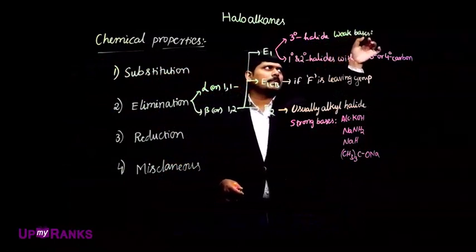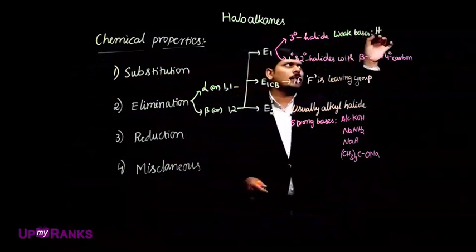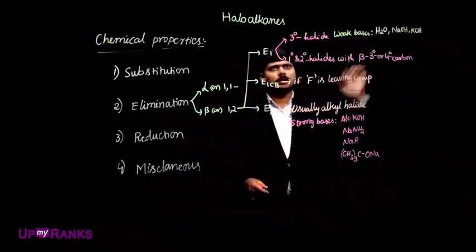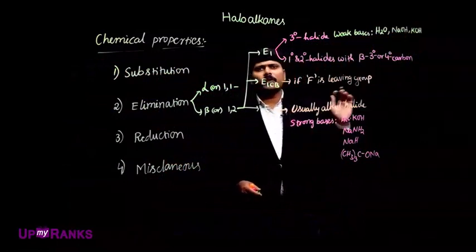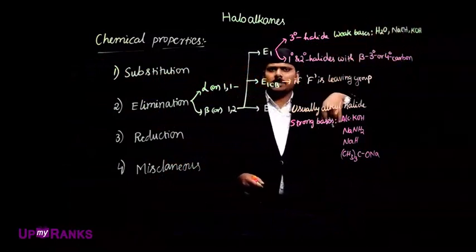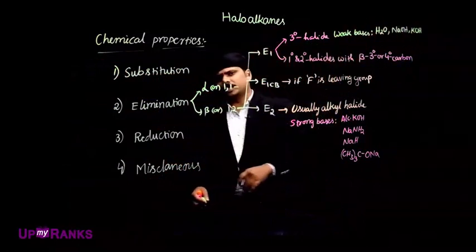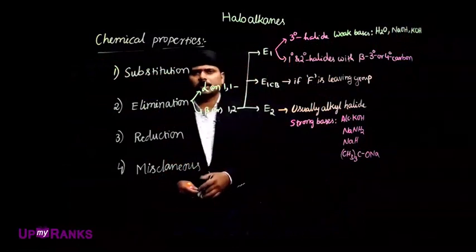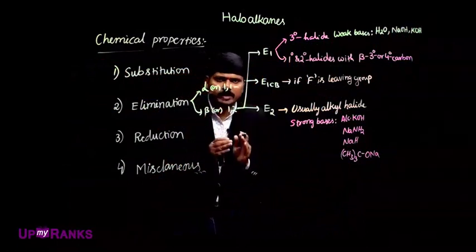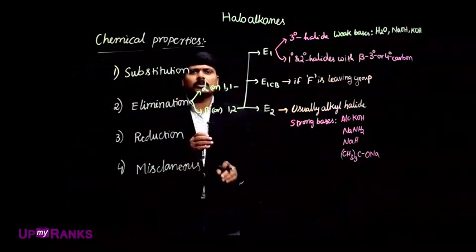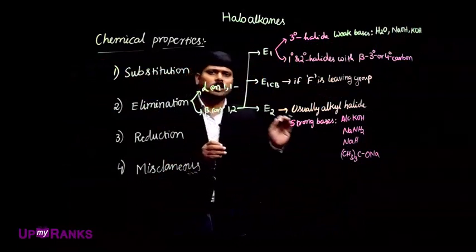Weak bases include water and dilute NaOH. In the presence of weak bases, E1 elimination can occur. So based on what base we are using and what alkyl halide we have taken, that is going to decide what product we are going to get.